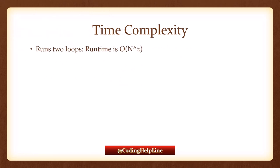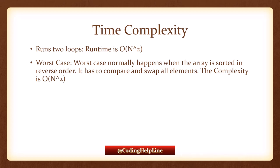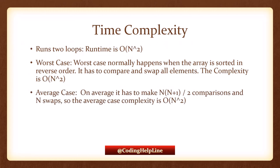Time complexity. Selection sort runs two loops, so the runtime is O(n²). In the worst case, which normally happens when the array is sorted in reverse or descending order, it runs in O(n²) time. In the average case, it runs at minimum n multiplied by (n+1) divided by 2 comparisons and n swaps, so the average complexity is also O(n²).